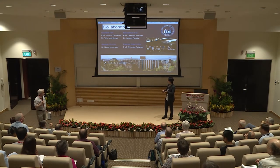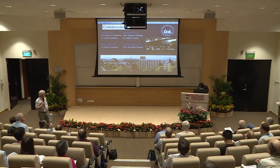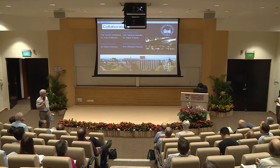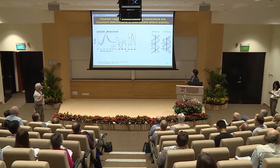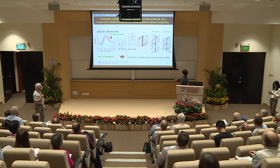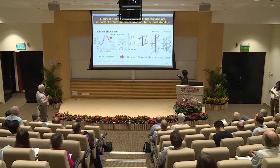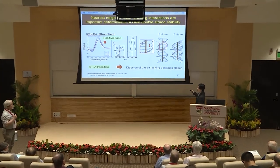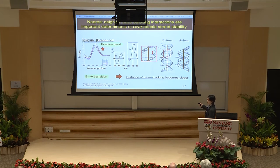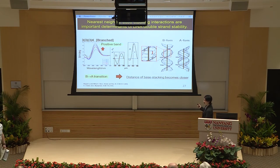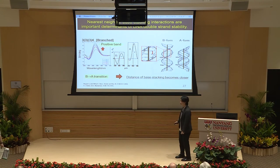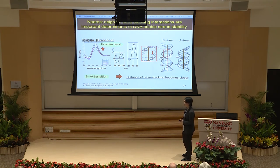Do you have any idea why the stacking interaction would be larger at higher temperatures? The A-form has a shorter distance between base stacking compared to B-form, so the base stacking in that direction becomes stronger. However, this wouldn't depend on temperature — I want to understand the temperature effect specifically. I'm sorry, I don't know. I haven't clarified that yet.